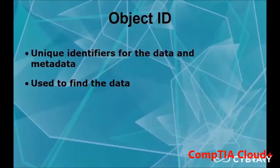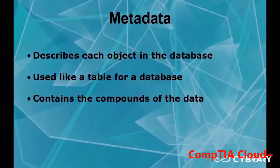An object ID is a ubiquitous identifier for the data and metadata used to find the data. The object ID is mainly just a header — it might be the name of the file, for example. The object ID allows you to be able to see what you're about to access without having to open up the document and read it. Metadata describes each object in the database, used like a table for a database, and contains the components of the data — it allows you to get a better detail of what you're reading.